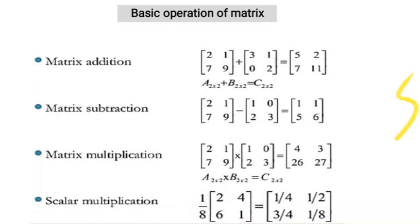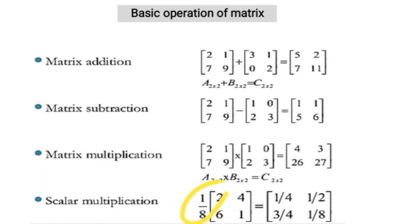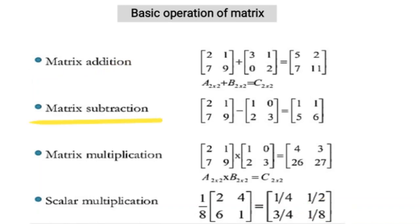If it is a 3×3 matrix you would multiply all nine values. Here: 1/8 × 2 = 1/4, 1/8 × 4 = 1/2, 1/8 × 6 = 3/4, and 1/8 × 1 = 1/8. So this covers the basic operations of the matrix: addition, subtraction, scalar multiplication, and matrix multiplication.